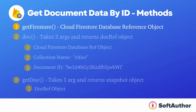To get a specific document from a collection in Firebase 9, I will need three methods. The first is the getFirestore method, which will return a Cloud Firestore database reference object.